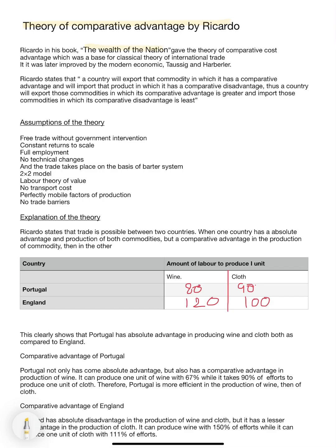Ricardo, in his book The Wealth of the Nation, propounded the theory of comparative cost advantage, which is the base for many classical theories of international trade, and it has been later improved by Heckscher and Ohlin. Ricardo states that a country will export a commodity in which it has comparative advantage, and will import the product in which it has comparative disadvantage.